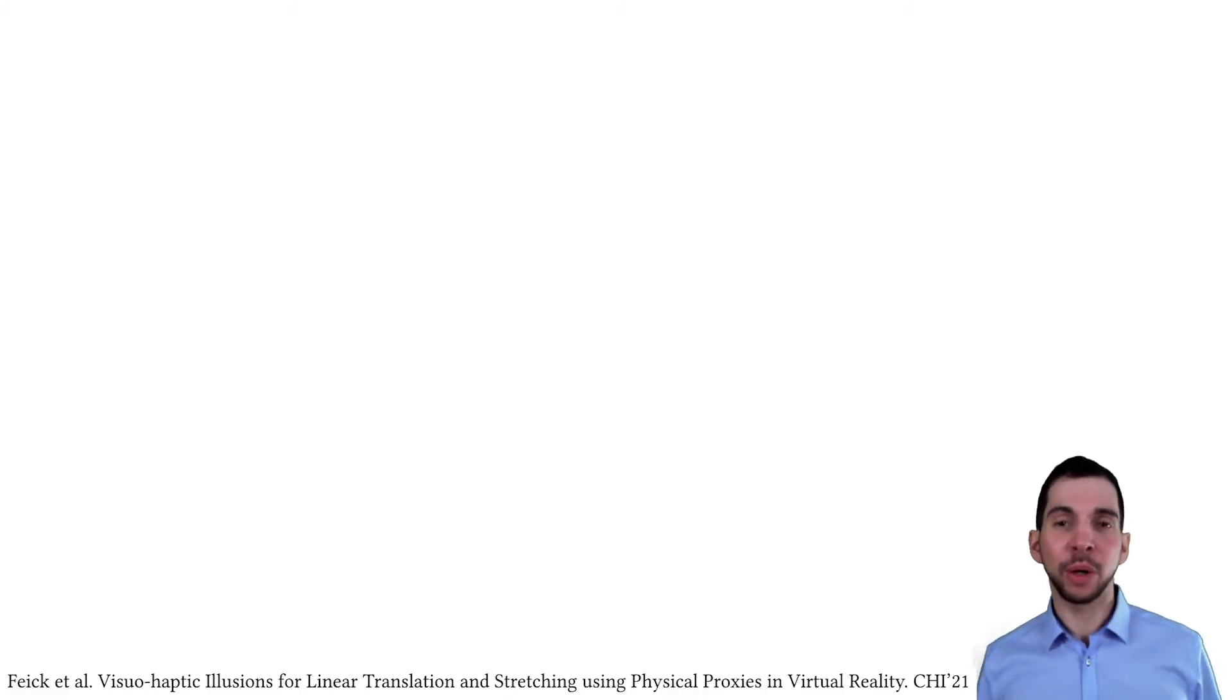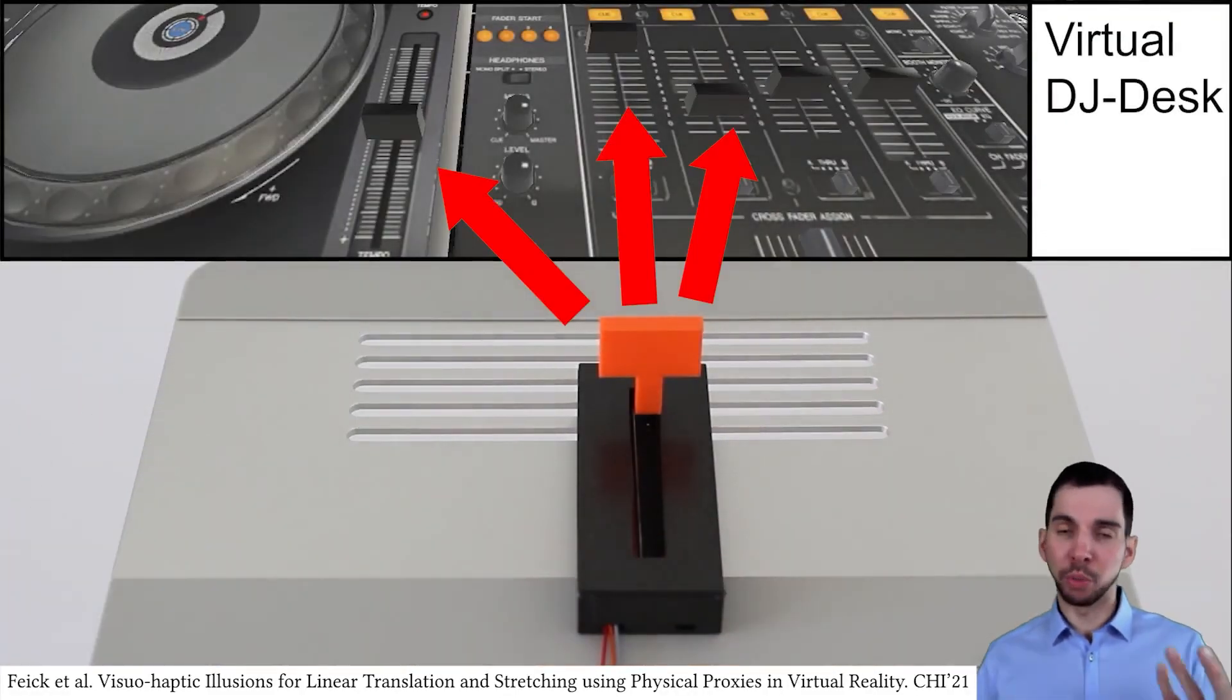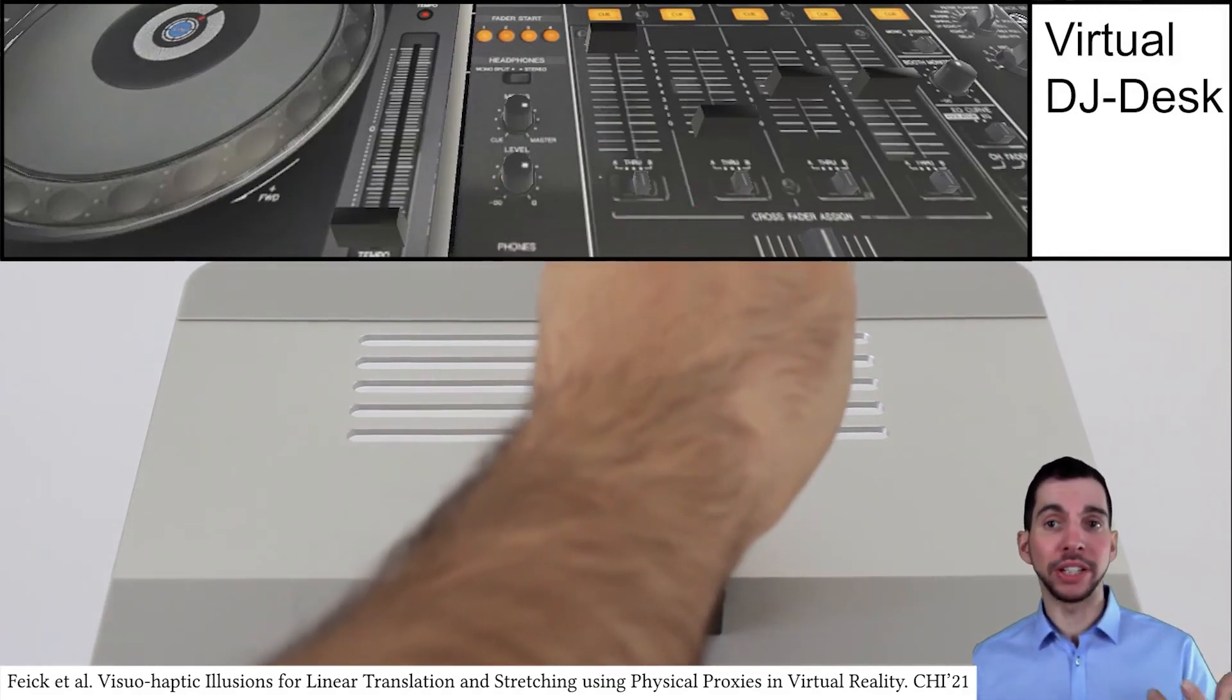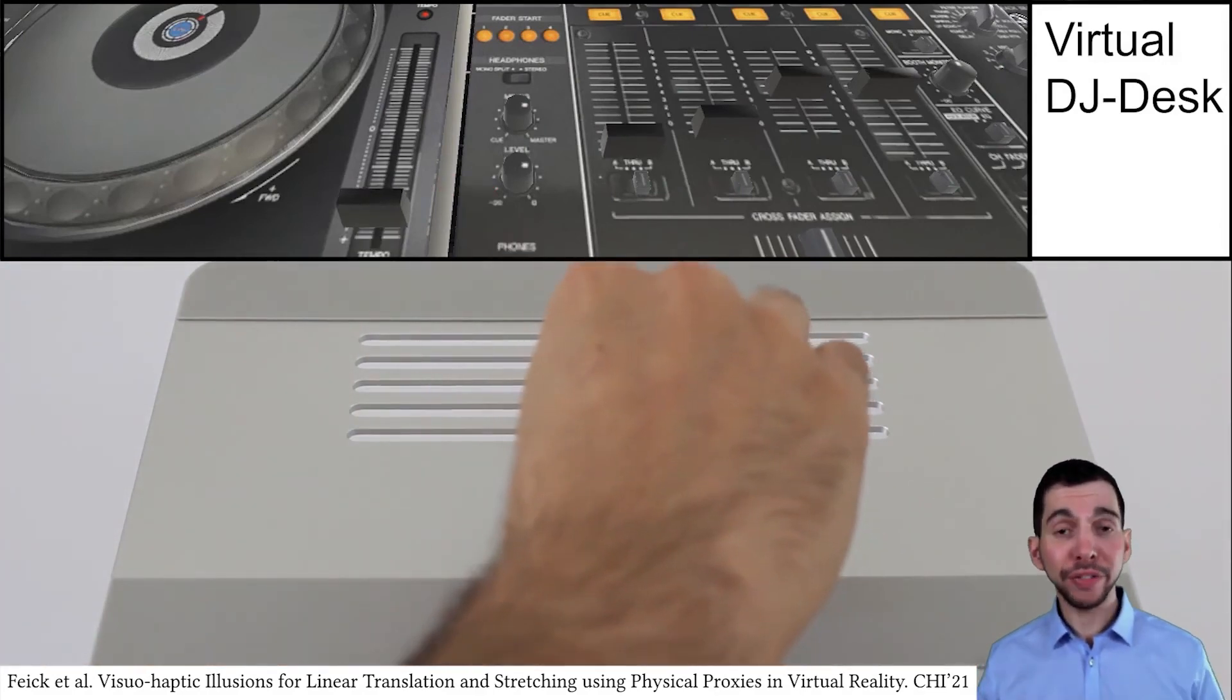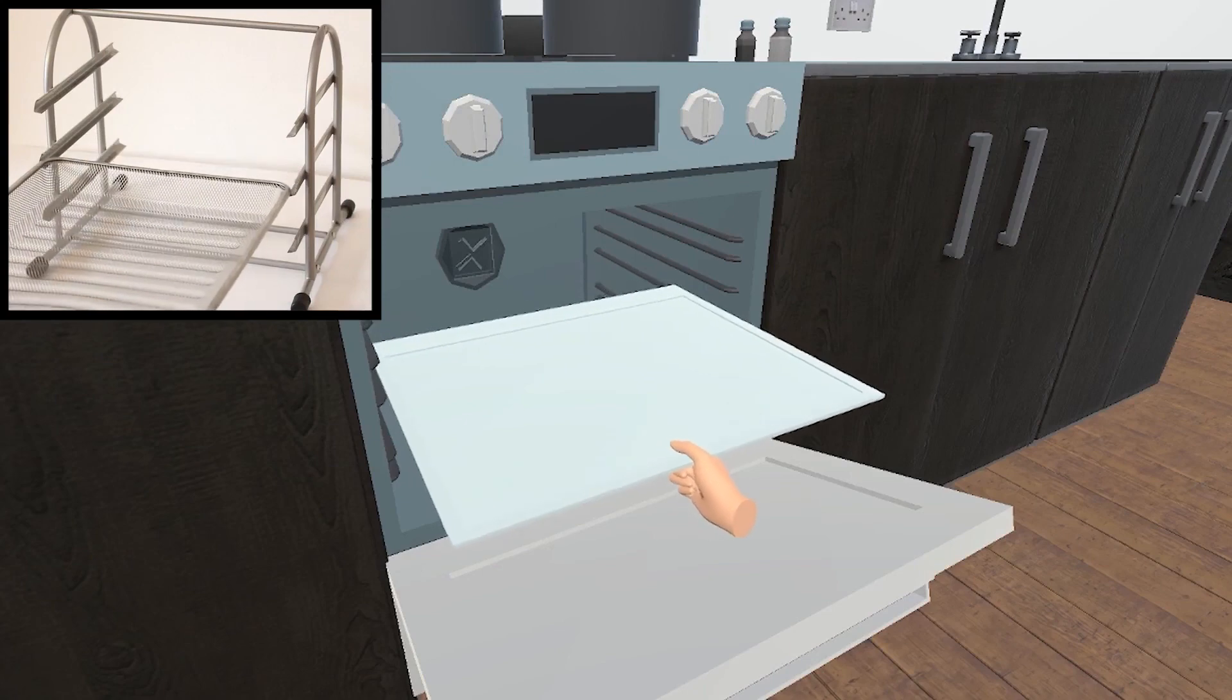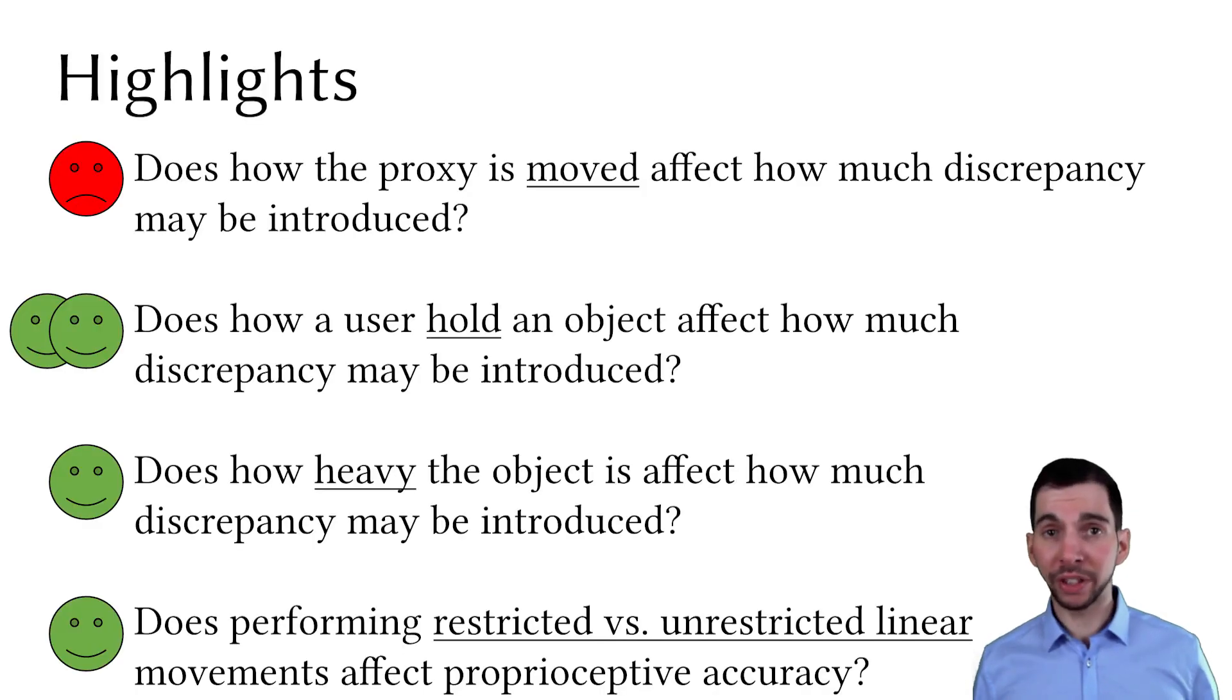And just to add to that, last year we already identified variables that need to be considered. Just to give one example here, the extent to which a proxy is manipulated, such as this slider here. So we found that smaller manipulations allow for significantly greater offsets. And with this, I want to conclude my talk. Thanks so much for listening.